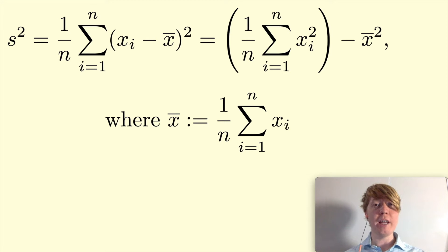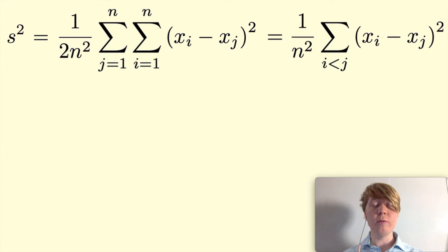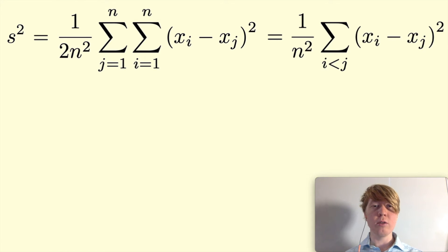Here we're dividing by 1 over n rather than 1 over n minus 1. This will make things nicer when we do the calculations, but you could at the very end just multiply by n over n minus 1 if you have to include Bessel's correction. So these are the two formulas we're going to prove — basically two double summations, and the one on the right in particular is a favorite of mine.